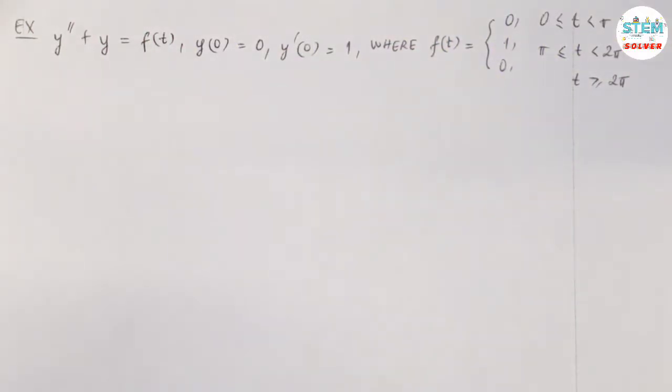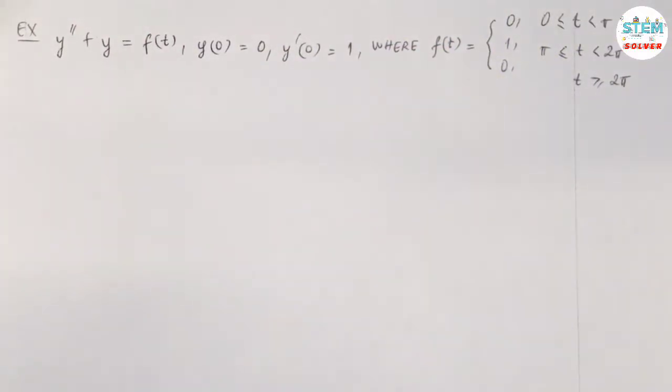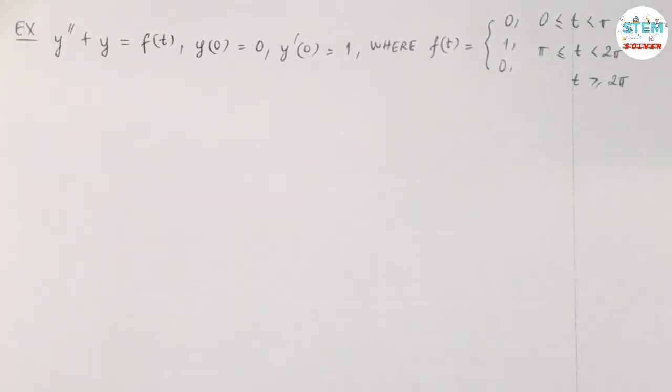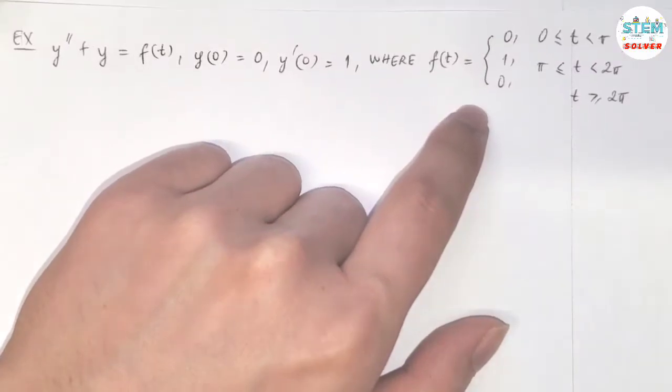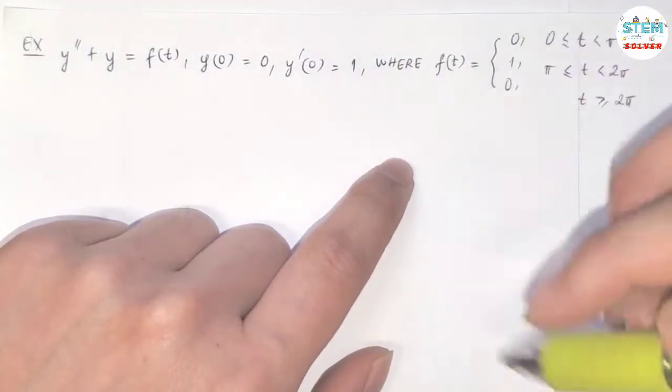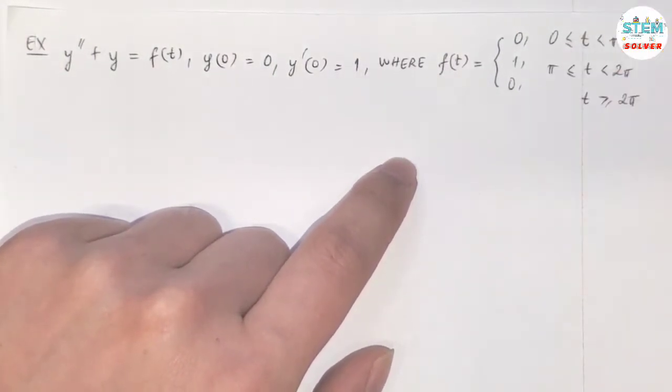Using the Laplace transform to solve the initial value problem y'' + y = f(t), and you are given y(0) = 0, y'(0) = 1. So here's our f(t), and we need to rewrite the thing in terms of unit step function because we cannot solve it as a piecewise function.